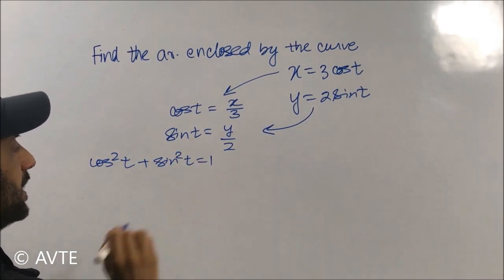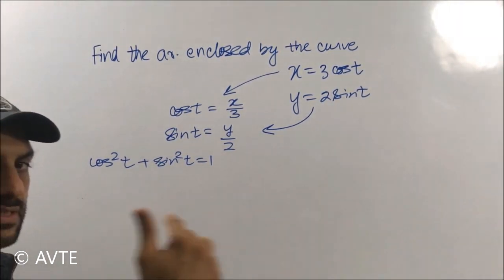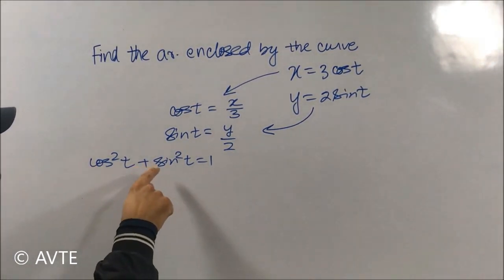Because whenever we find the area it is always between Y equals and X. Whenever we find the area it is always of the form Y equals to f(X) or X equals to f(Y). So using cos square t plus sine square t is equal to 1, we'll eliminate t.